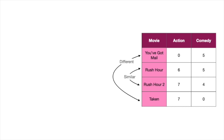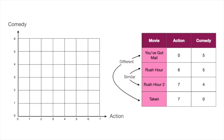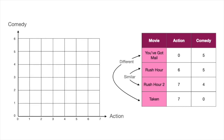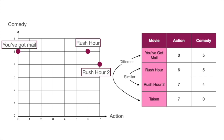Since there are two entries per movie, we can plot them in the plane where the horizontal coordinate represents action and the vertical one comedy. You've Got Mail is at (0, 5), Rush Hour is at (6, 5), Rush Hour 2 is at (7, 4), and Taken is at (7, 0). Notice that similar movies are close together in this embedding and different movies are far apart.